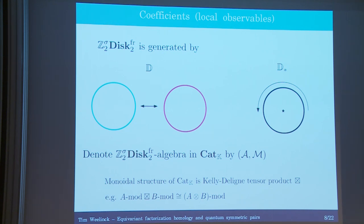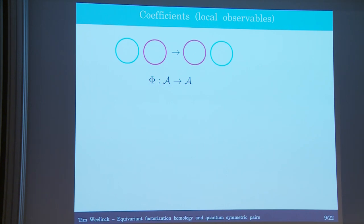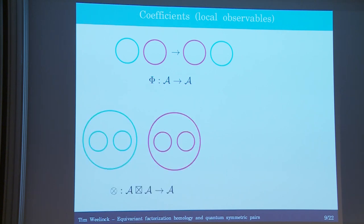One thing you could do is take this free quotient and flip the two disks — that's an equivariant embedding from this thing to itself, so it should get assigned a functor phi from A to A. We could also take two copies of D and embed into D again, which results in a functor from the tensor product A tensor A to A — that's a tensor product functor. Or we might take a copy of D and a copy of D-star and embed into a bigger D-star, which gives a functor from M tensor A to M.